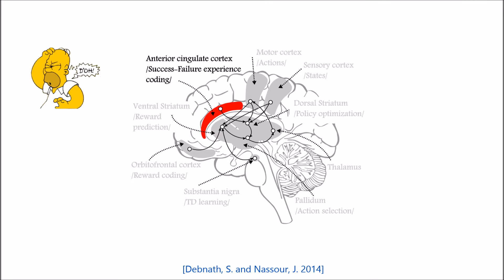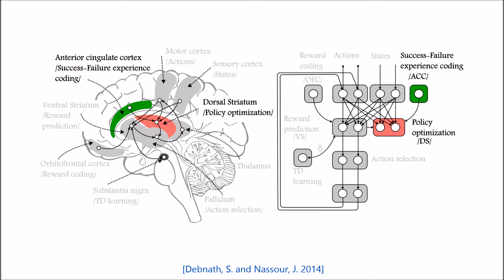On the other side, the activation in the ACC takes place when human tries to take a risky action and also after taking an action that has resulted in a failure. Therefore it is involved in success-failure coding. The ACC along with the dorsal striatum helps in carefully choosing an action depending on its current state and past experience of success and failure.